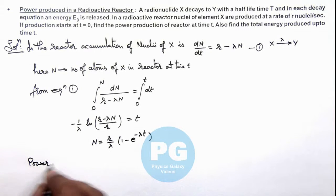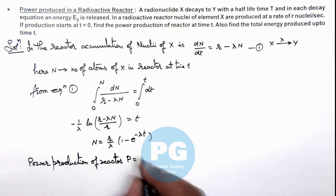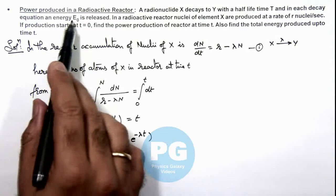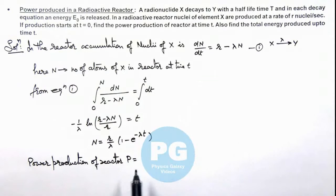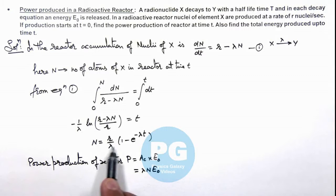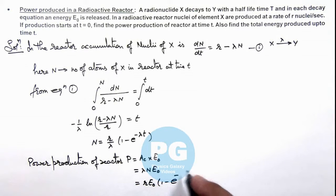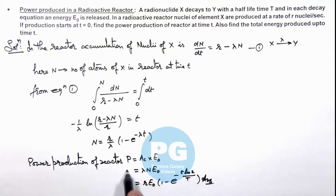From here we can calculate the power production of the reactor, which is given as the activity λN multiplied by E₀, because E₀ is the energy released in one decay process. So at time t, power equals activity times E₀. Substituting the value of activity as λN, and N as (R/λ)(1 minus e to the power minus λt), this gives us power equals R·E₀ times (1 minus e to the power minus λt). Writing λ as ln2 divided by T, the final result for power production is R·E₀·(1 minus e to the power minus t·ln2 divided by capital T).